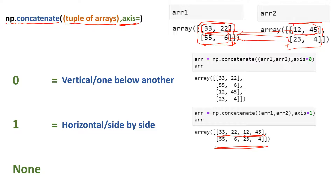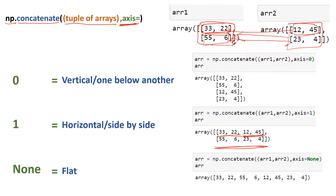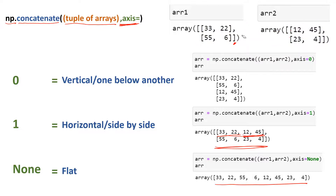The third value is none, which means a flat join. When you use none you get a 1D array as output. It combines everything from all supplied arrays together and produces a single 1D array. This is how we use concatenate.